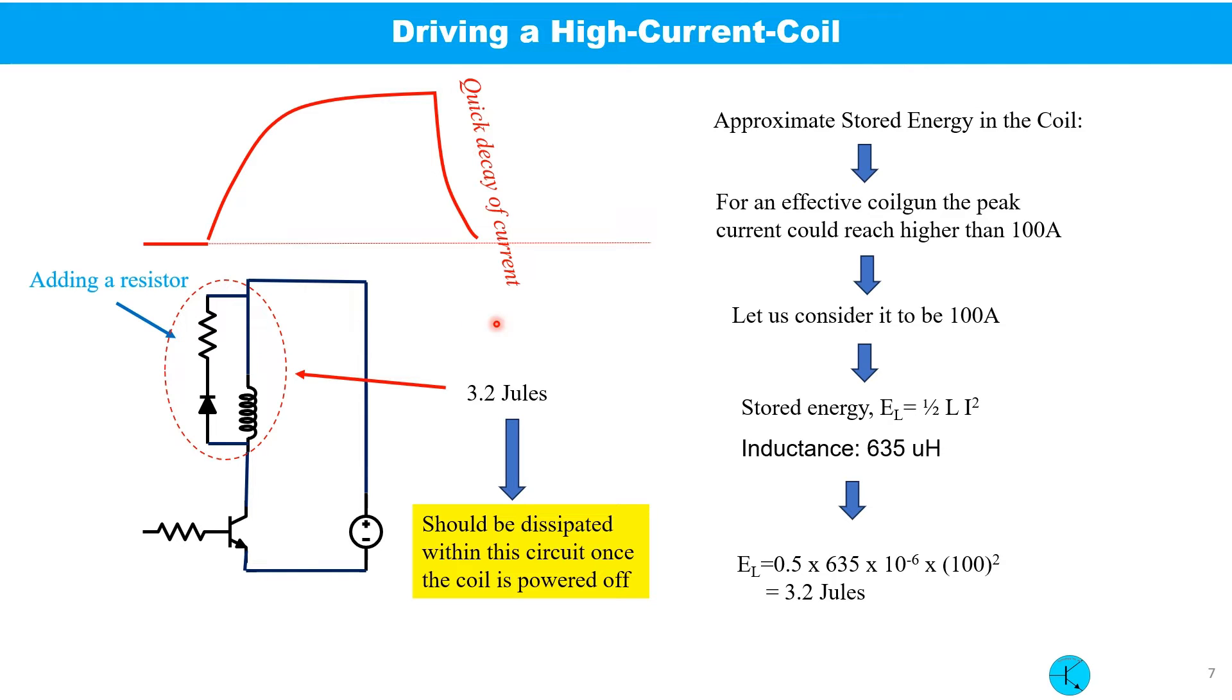For an effective coil gun, current may reach as high as 100 amp. So for 100 amp coil current, the stored energy is 3.2 joules. This much energy should be dissipated once the coil is off.